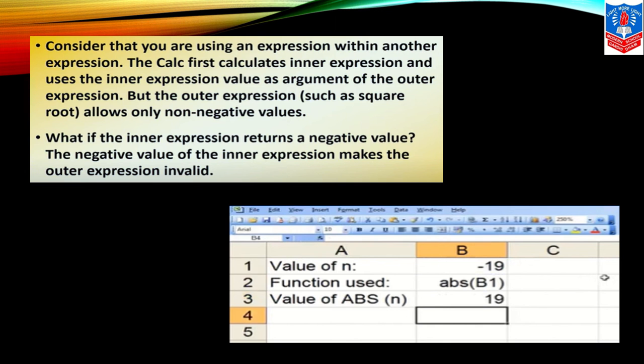You can see here the ABS function is used on screen. Value of n is minus 19. We are using on this B1. B is the cell name where the value is given, that is on first row, so B1. In bracket we are putting B1. Here we have to write equals symbol. Output is what? 19. Minus 19 gives positive value, 19.